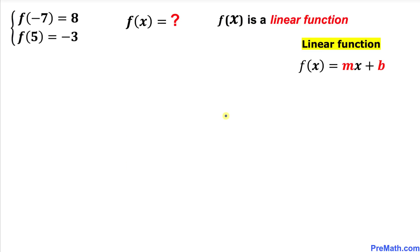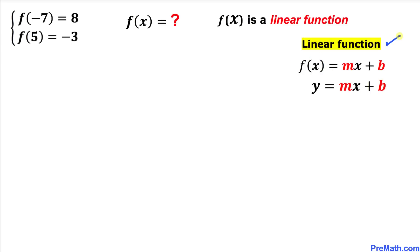Before we proceed any further, let's talk about linear functions. A linear function can be of the form f of x equal to mx plus b, where f of x can also be written as y. So the linear function can be written as y equal to mx plus b, which is also called slope-intercept form.